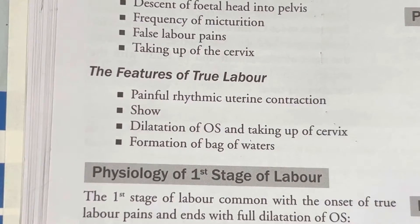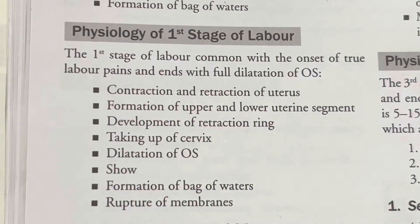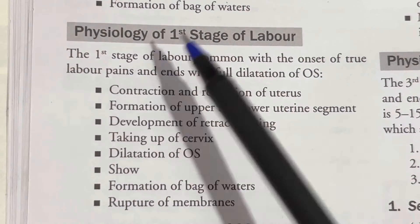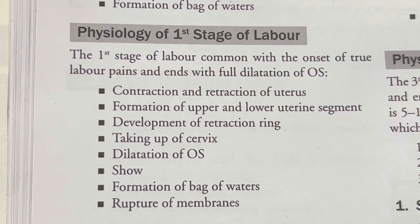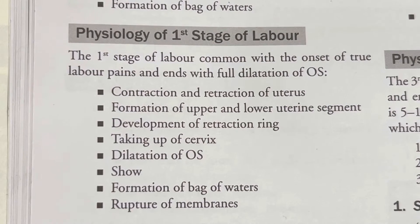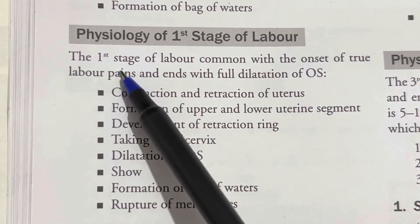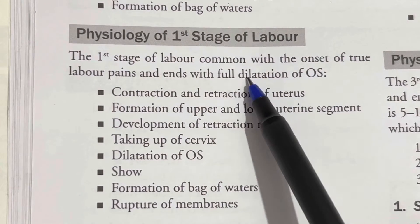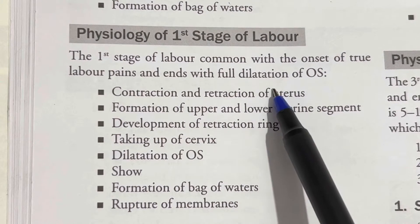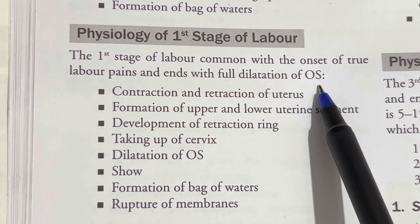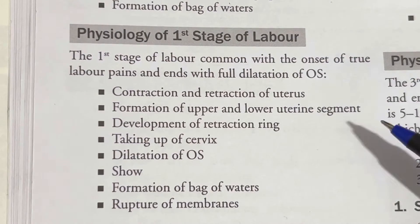Now moving to the physiology of the first stage of labour. The first stage of labour starts from the onset of true labour pains and ends with full dilatation of the cervix, that is 10 centimeters.